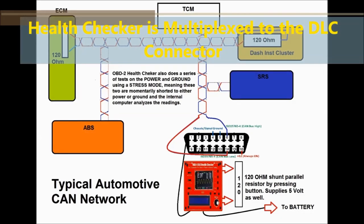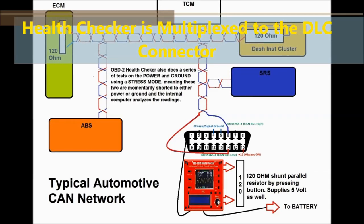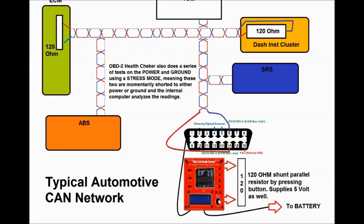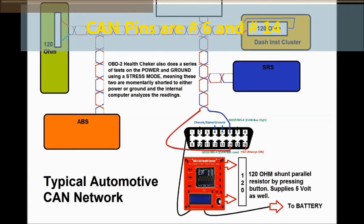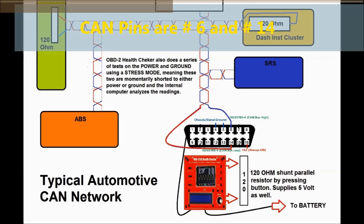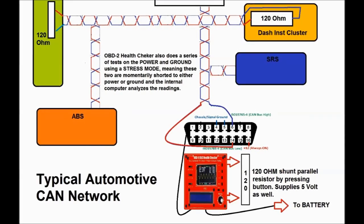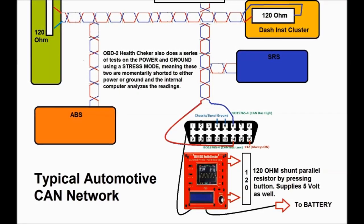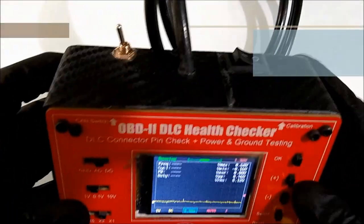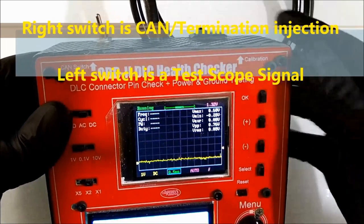The OBD2 connector is linked through the DLC Health Checker to all the pins through a multiplexer inside. For CAN, there are only two pins we are concerned with: pins number 6 and 14. The unit also has a 120 ohm termination resistor built in, activated by a switch on top. If you have no 120 ohm termination resistor, you won't have CAN. You flip that switch and it'll give you a CAN signal so you can at least communicate and determine that is your problem.